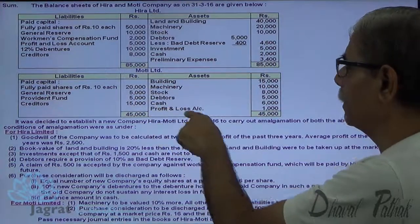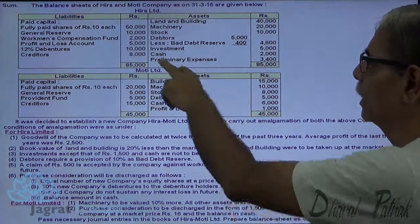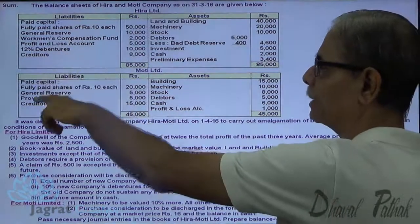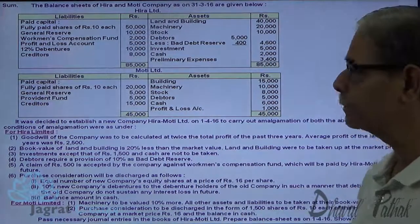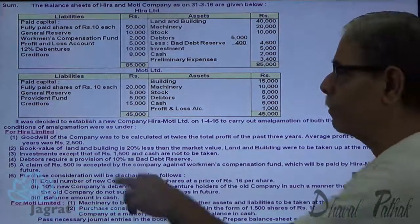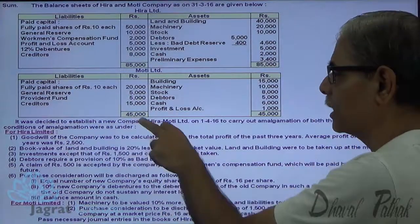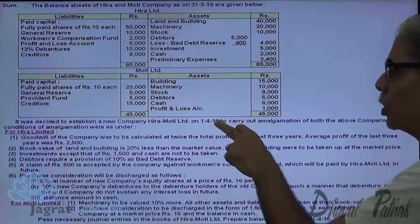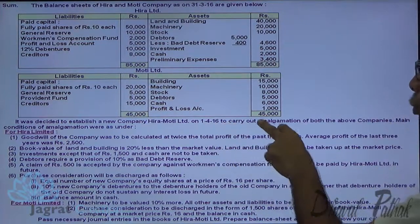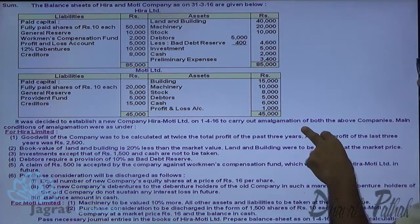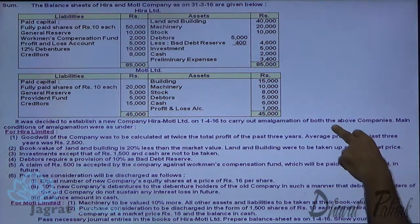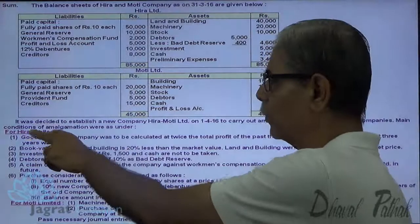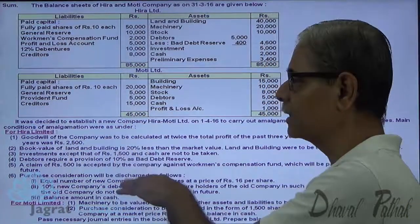In Muthi Limited there is a debit balance of profit and loss account, and there are preliminary expenses. Hira Limited has 12% debentures, while Muthi Limited has none. It was decided to establish a new company, Hira Muthi Limited, on 1st April 2016 to carry out amalgamation of both the above companies. The main conditions of amalgamation were as under.